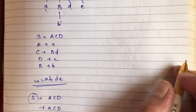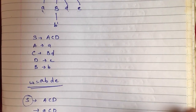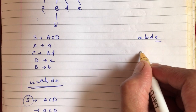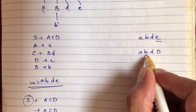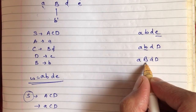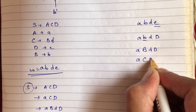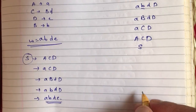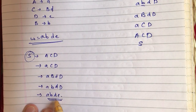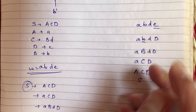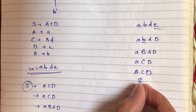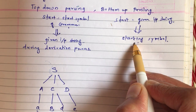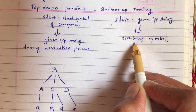For the same example with string a, b, d, e — in bottom-up parsing, I start from the string and reduce step by step. First, I reduce e to D. Then I reduce b to capital B. Then I reduce BD to C. Then I reduce a to capital A. Finally, I reduce ACD to capital S. The process involves the same steps, but the approach is that I am not solving from the starting symbol to the input string — instead, I start from the given input string and by applying production rules in reverse, I reduce it to the starting symbol of the grammar. This approach is referred to as bottom-up parsing.